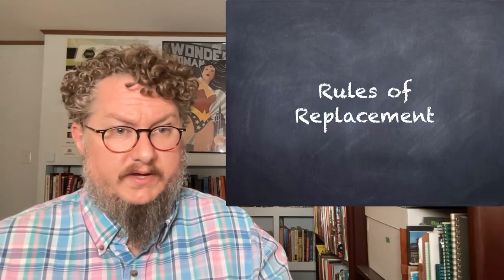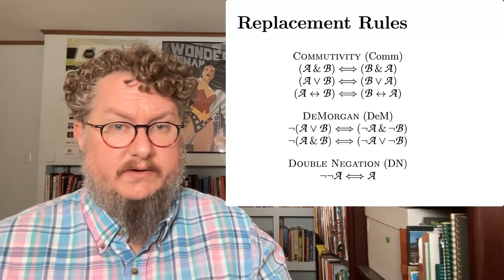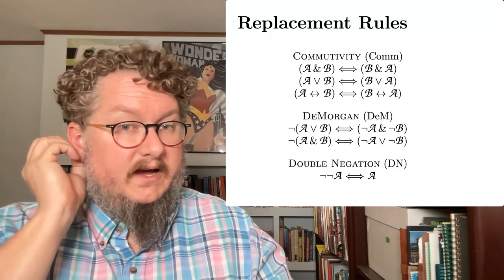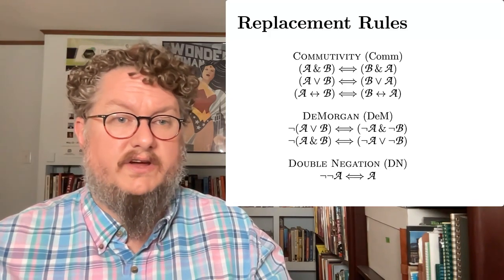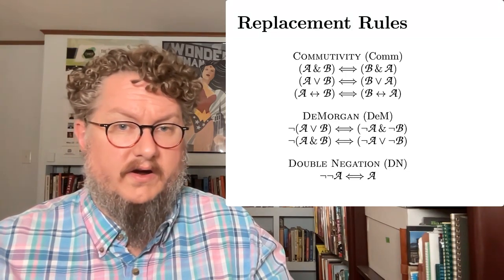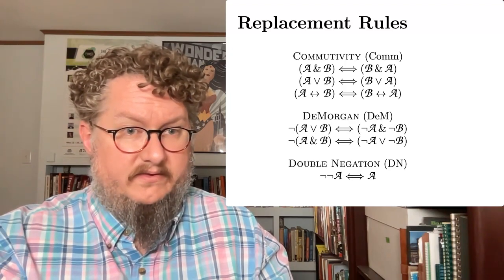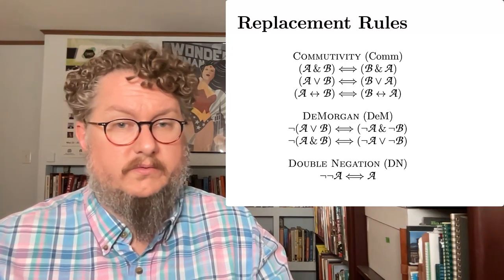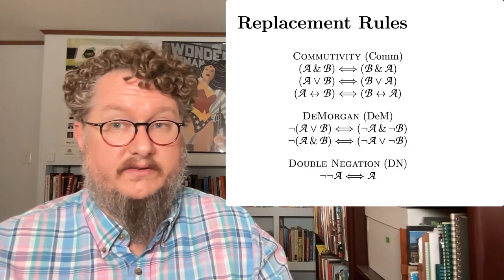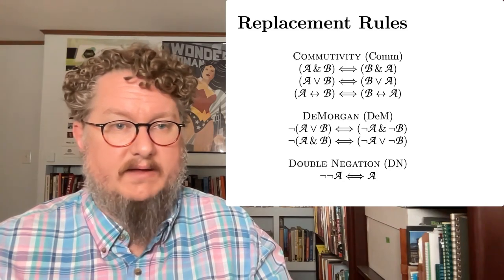Let's go through the examples from the book. We have first the commutativity rules. They allow us to take any conjunction, disjunction, or biconditional and substitute it for the reverse version. The order doesn't matter for these connectives, and the commutativity rule reflects that. And again, you can apply this to sub-expressions, to parts of expressions that fit that mold.